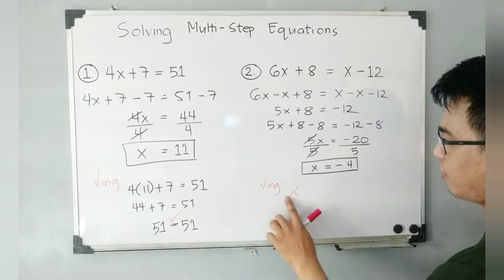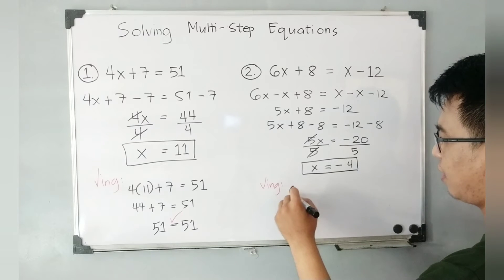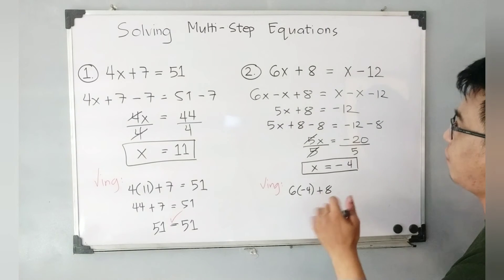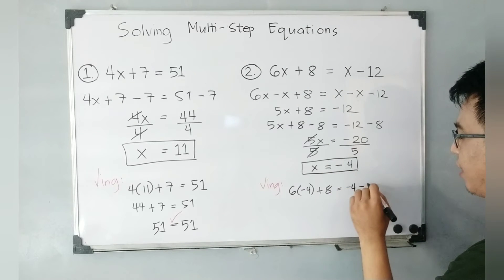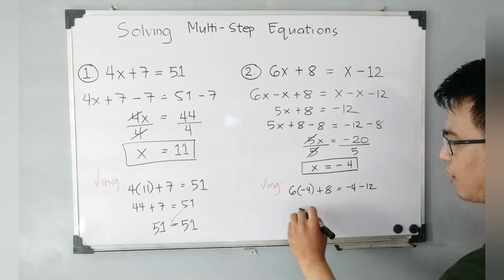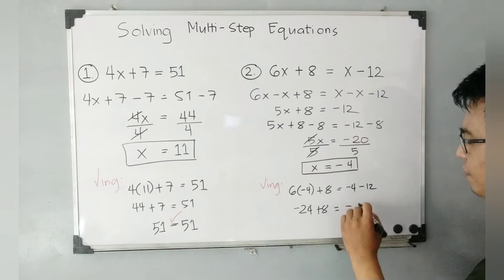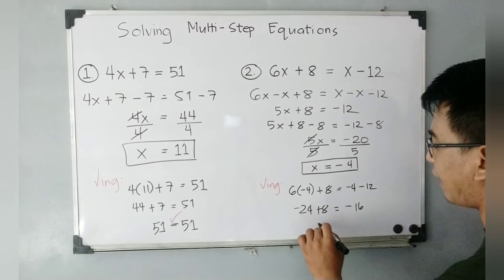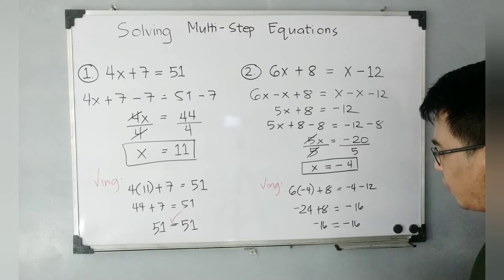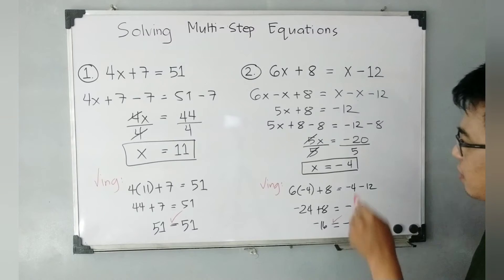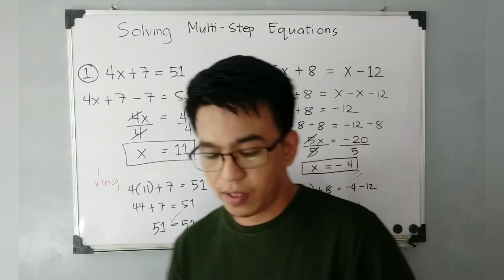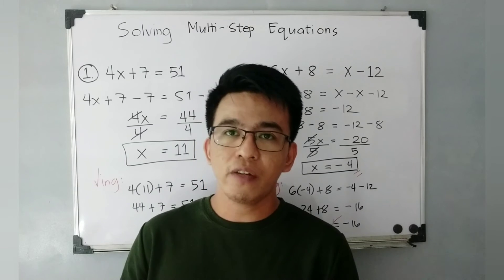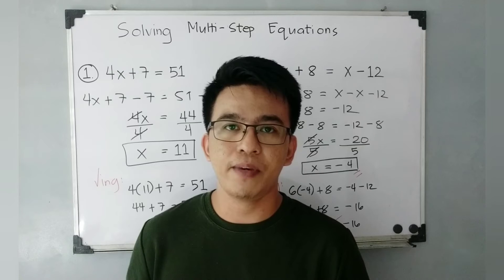We have 6 times negative 4 plus 8 is equal to negative 4 minus 12. That gives us negative 24 plus 8 is equal to negative 16, and negative 24 plus 8 is also negative 16. So negative 16 is equal to negative 16 — they are equal. Therefore, x equals negative 4 is correct. This is not that hard to solve if you follow the step-by-step process for solving multi-step equations.